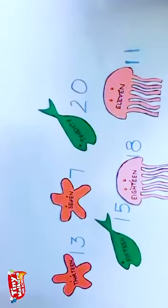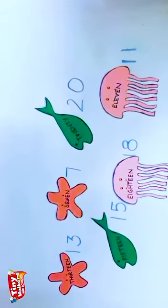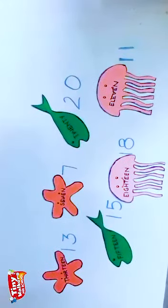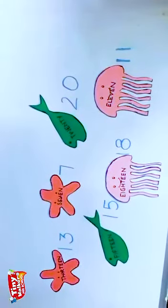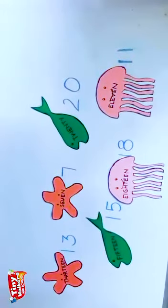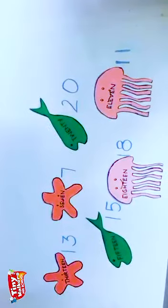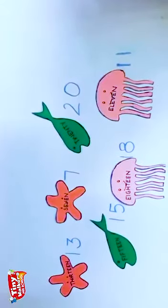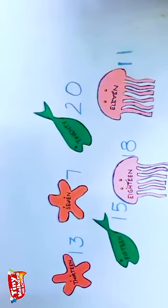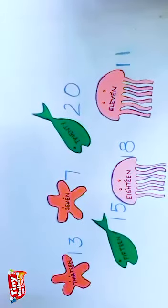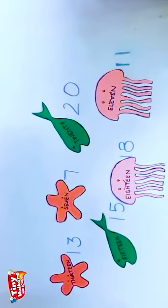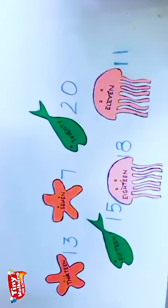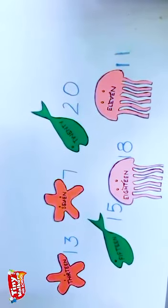So children, today we learnt the spellings of numbers one to twenty. Aaj humne one say twenty ke beech mein kuch selective numbers ke saath eek game khayli. Aapne kya karna hai? You also do this activity. Or you can simply learn the number names from one to twenty. Aapne hin numbers ke spellings yaad karne hai? And don't forget to send me the voice note. Bye-bye.